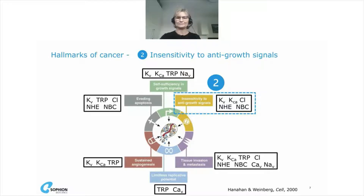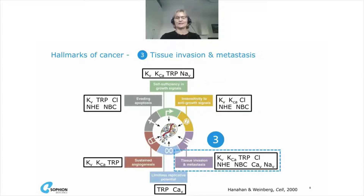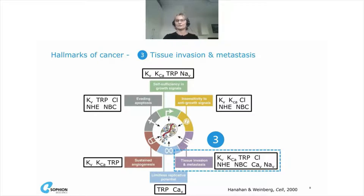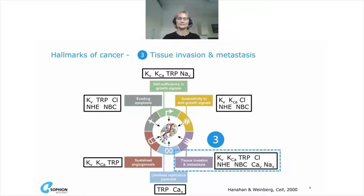Tissue invasion and metastasis is the third hallmark of cancer — the ability of cancer cells to invade tissues and metastasize, with increased mobility to move to other tissues, as checks and balances are lost, allowing cancer to grow uncontrollably. The fourth hallmark is limitless replicative potential — one of the key elements we associate with cancer is the ability of cancer cells to replicate numerous times without the usual lifespan or cell division cycle stop signals.